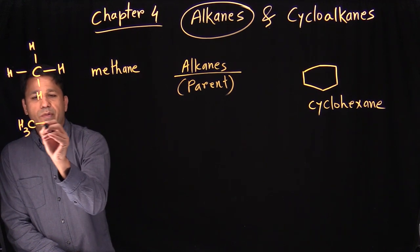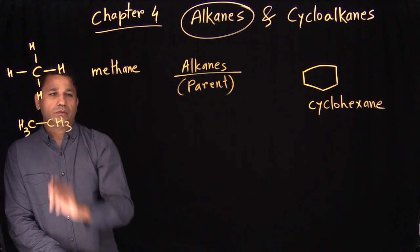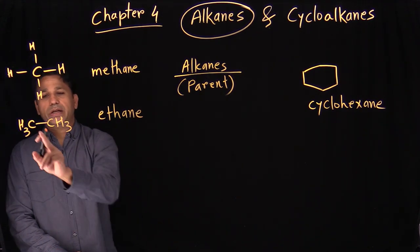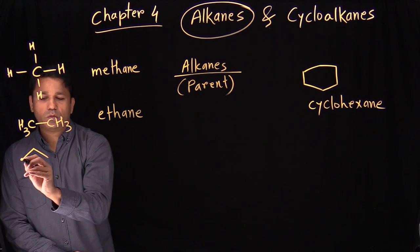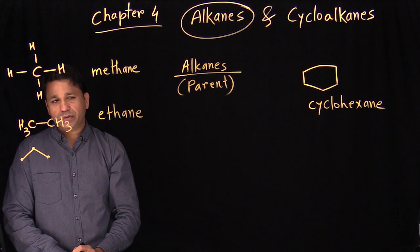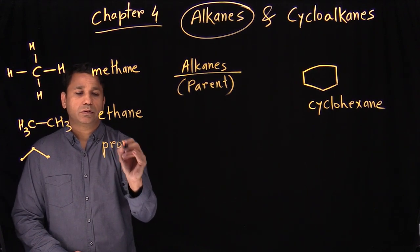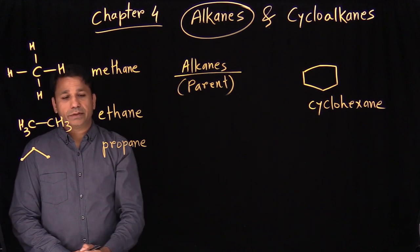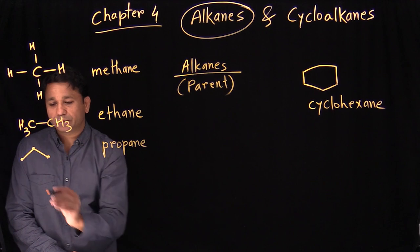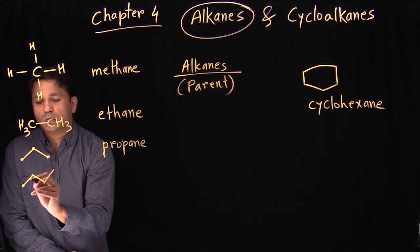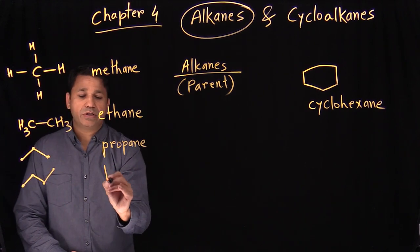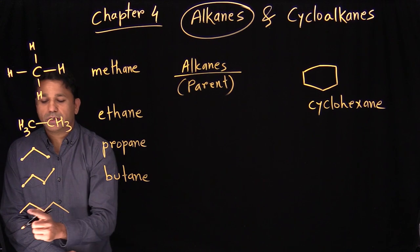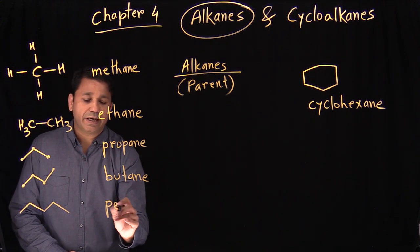We can have a two-carbon alkane, which is a carbon-carbon bond — CH3-CH3 — and that becomes ethane. Three carbons becomes propane. Propane is the same thing you buy in a propane tank. Then you have butane, a four-carbon alkane. And five carbons is pentane.